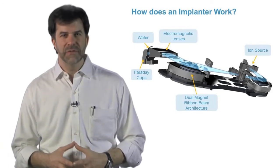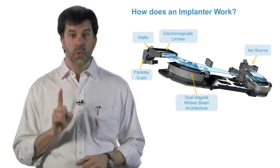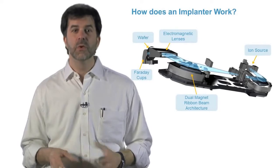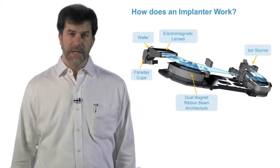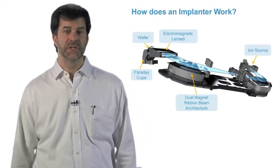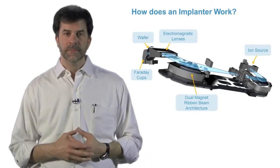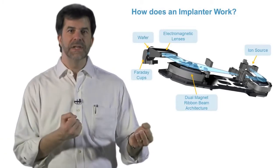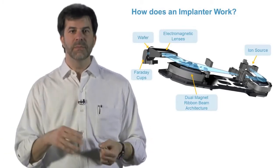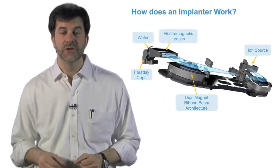All of the ions have positive charges. Most have plus one, some have plus two, and even fewer have plus three. In addition, there are many different ions in the mix, some atomic, some molecular, some from the gas, some from the chamber walls. An extraction voltage pulls the ions out and sets them on their way with up to 50 kilo electron volts of energy.